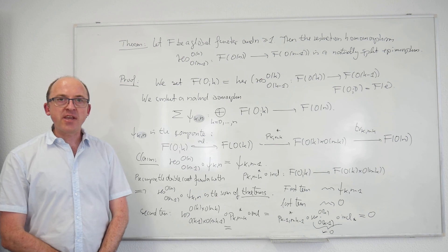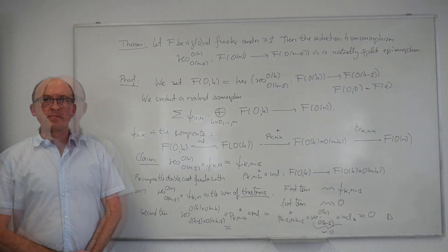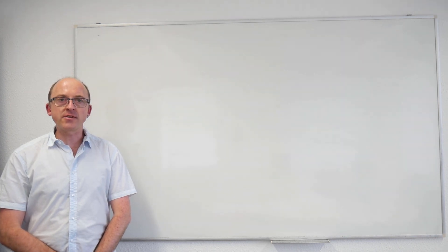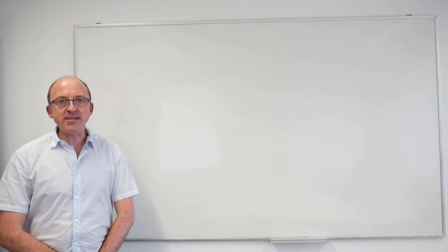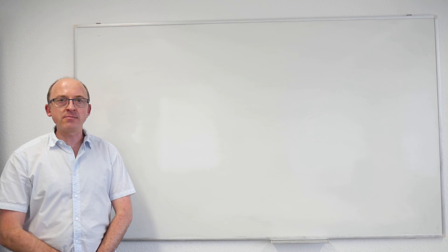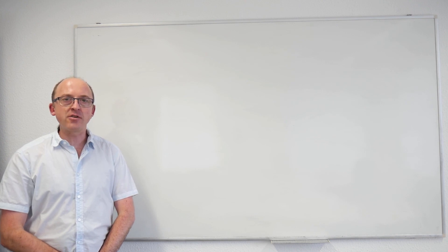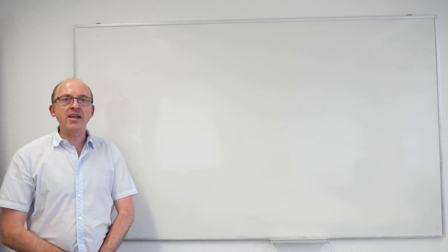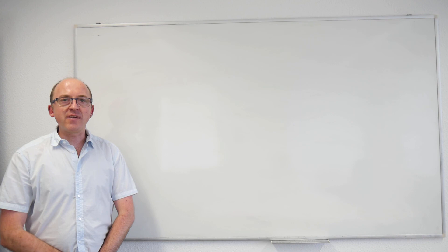As I mentioned, there is an analogous splitting for the values of global functors at unitary and symplectic groups, and the argument is essentially the same. In the unitary and symplectic cases it is even a tiny bit easier because the double coset formula comes out with three terms, but the middle term — the one from the open interval with the minus sign — is actually zero because it is a transfer along a subgroup with an infinite Weyl group. The difference between the orthogonal case and the unitary and symplectic cases ultimately comes from the fact that O(1) is a finite group while U(1) and Sp(1) have positive dimension.